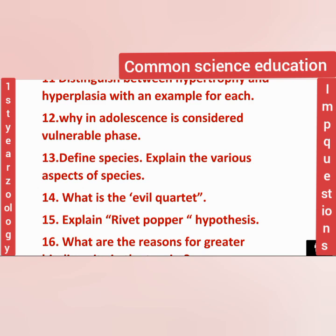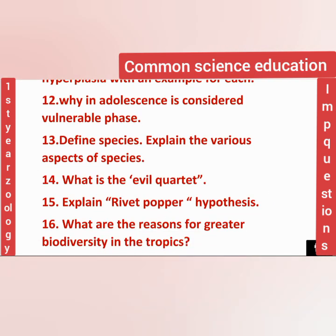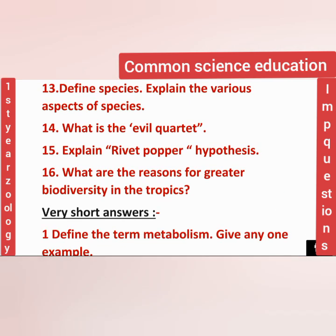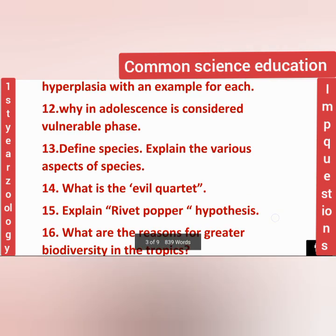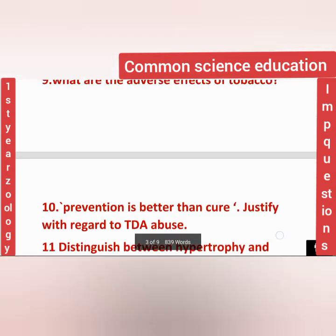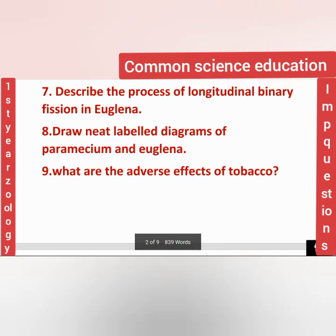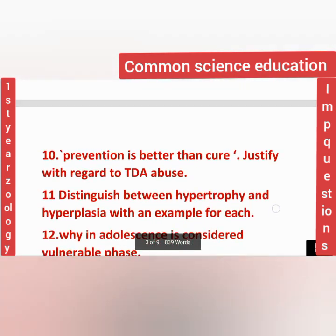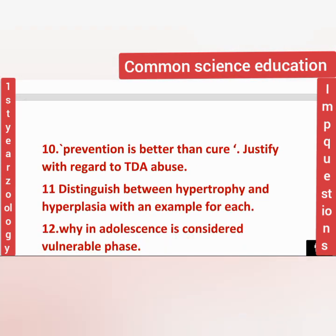From these selected questions, you should attempt at least five questions. In Unit 6, questions like: define species, what is evolution, explain the Hardy-Weinberg hypothesis, what are the reasons for greater biodiversity in tropics. These questions are selected from four units, and you can mostly attempt five questions from these in the exam to score 45 to 50 marks.